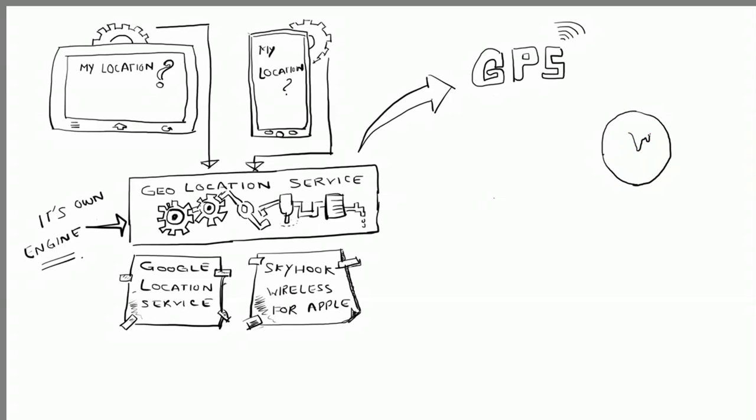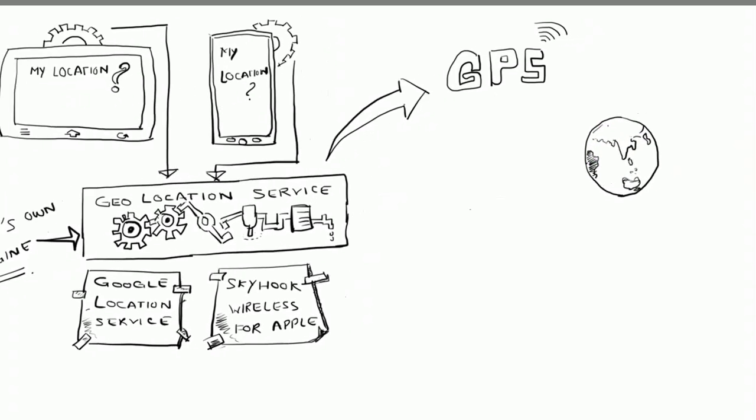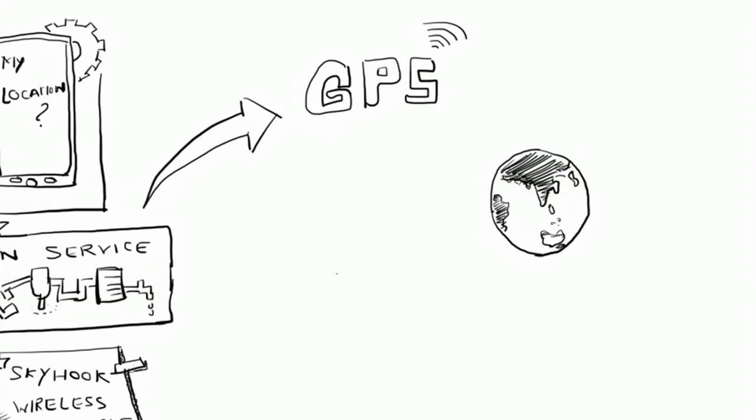GPS is a freely available positioning service provided by the US, but other countries also have similar positioning services available like Russia and even India. As far as GPS is concerned, there are 24 satellites around the earth which continuously keep watching what location you are having.